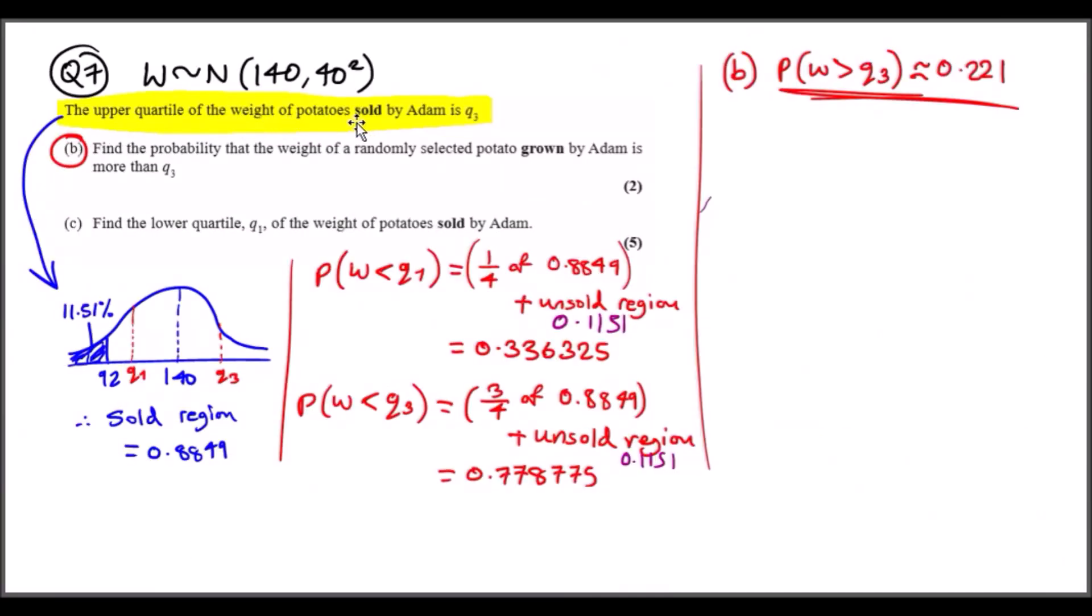Part b: the upper quarter of the weight of potatoes sold by Adam is Q3. We need to find the probability that the weight of any potato grown by Adam is more than Q3. For literally every question in normal distribution, always redraw the bell curve with updated information. From part a, the unsold was 11.51 percent which is less than 92. Now they want us to find Q3 of the sold (the white region). We need to take three quarters of the area of the white region, which is 0.8849 (that's one minus the unsold).